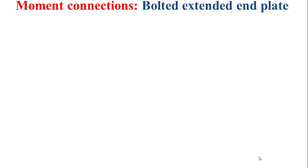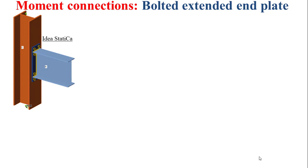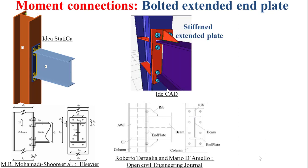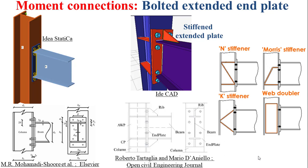Now I'll introduce the third type of moment connection, which can be called the bolted extended end plate. As depicted in the figure, we have a beam in light blue as child member connected to a column in brown as parent member using a connecting element called the end plate, depicted in dark blue. This end plate is welded to the flanges and the web of the beam and bolted to the flange of the column. This bolted extended end plate can be stiffened using stiffeners, and various types of stiffeners can be used.